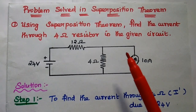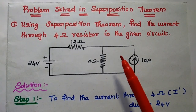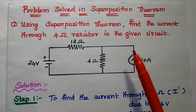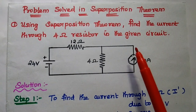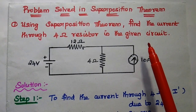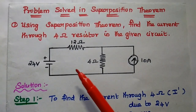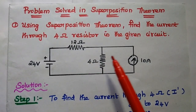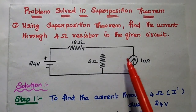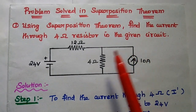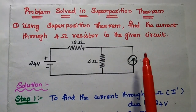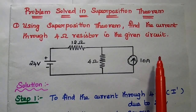Dear students, now we are going to solve important problems in superposition theorem. The first problem: using superposition theorem, find the current through the 4 ohm resistor in the given circuit.